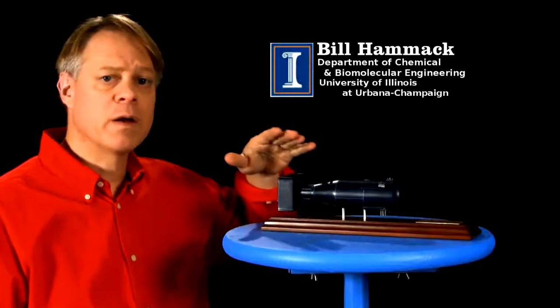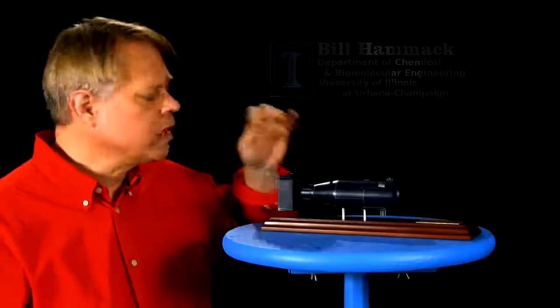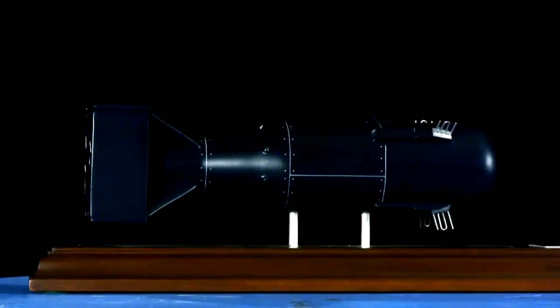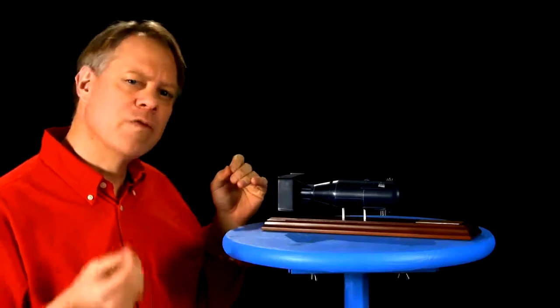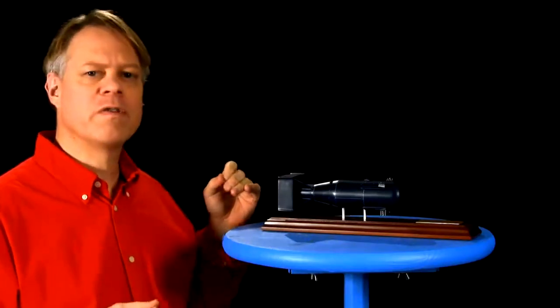I have here a scale model of the first atomic bomb ever used. This bomb, which destroyed Hiroshima, contains about 60 kilograms of uranium-235, of which only about 600 grams underwent fission.